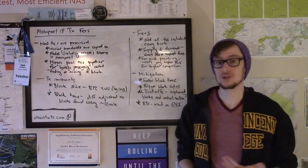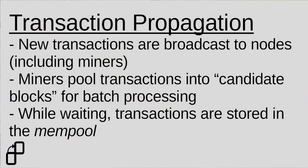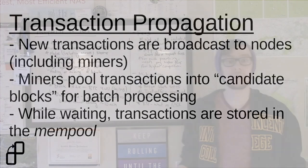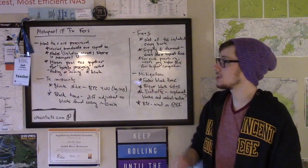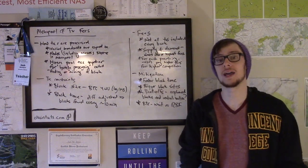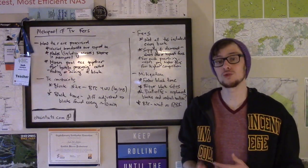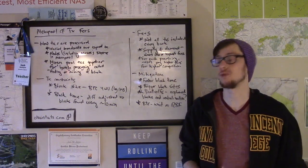Miners then pool unprocessed transactions together into what is called a candidate block, and miners work to solve the network's proof of work problem to finalize that block — essentially a batch processing of transactions. When you send out a raw transaction, it's not yet confirmed or completely accepted by the network. But when miners include your transaction in a block and solve the proof of work problem, your transaction is considered confirmed and fully processed.